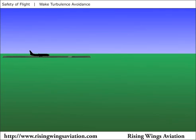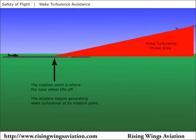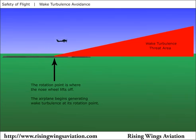If you were departing behind a larger aircraft, you should note its rotation point. It will start generating vortices as soon as its nose wheel comes off the ground. Staying above its flight path means lifting off prior to its rotation point and climbing out so as to remain above its flight path or turning to diverge from its flight path.